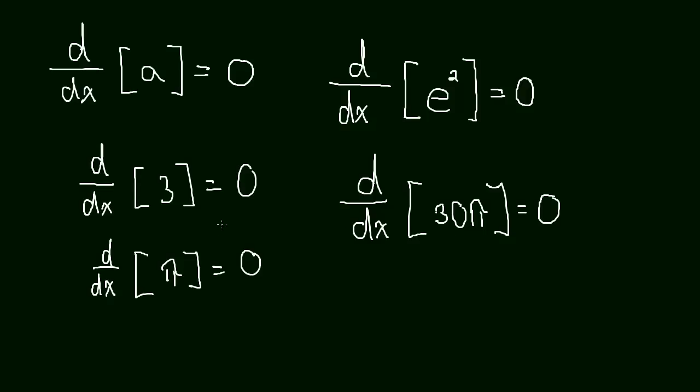Okay, so that's it. The derivative of a constant is a constant—or sorry, the derivative of a constant is 0. Okay, so that's an easy rule. See you in the next video.